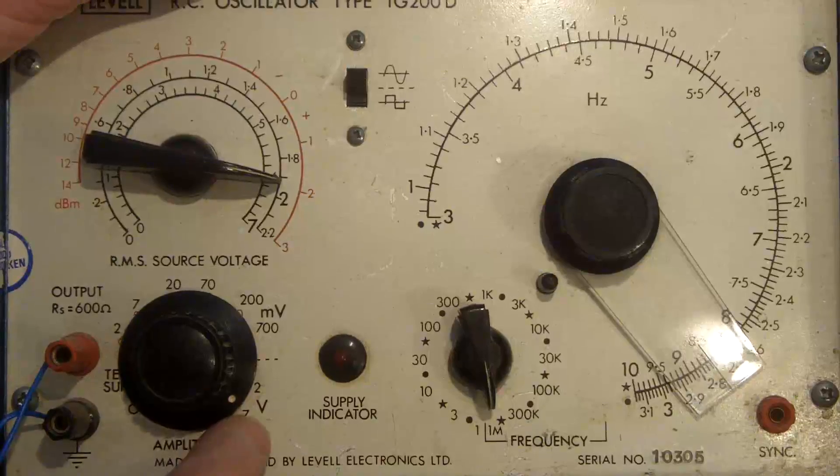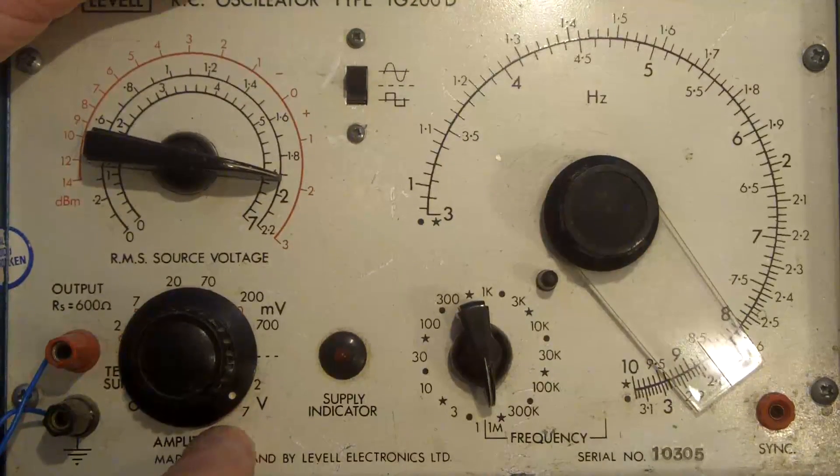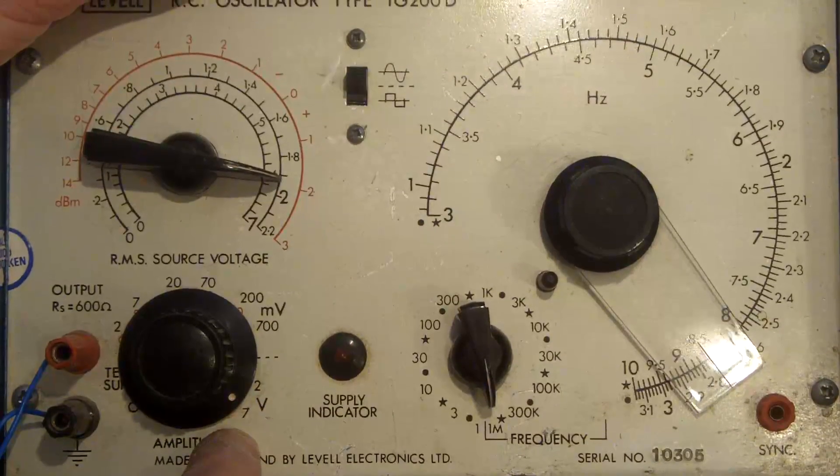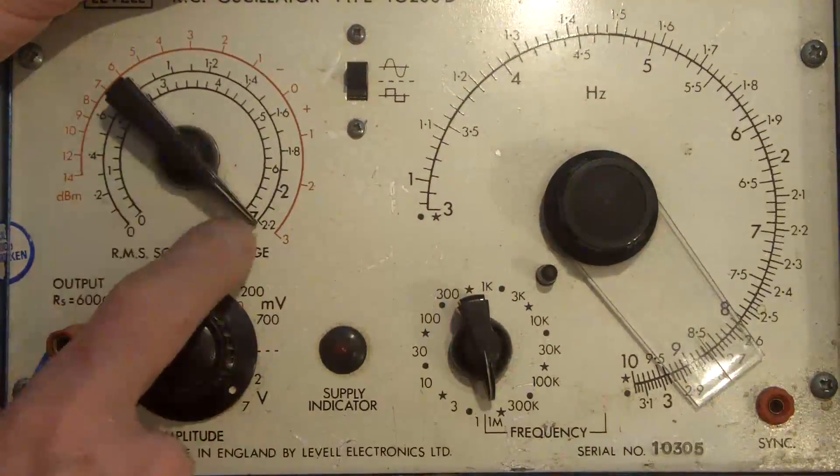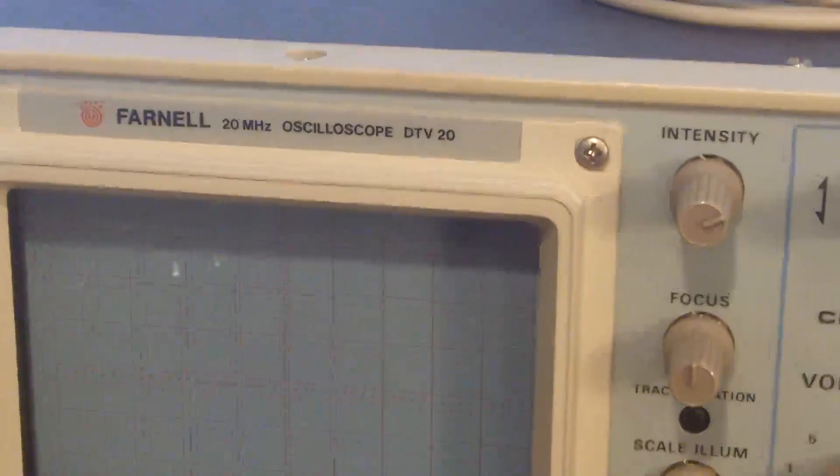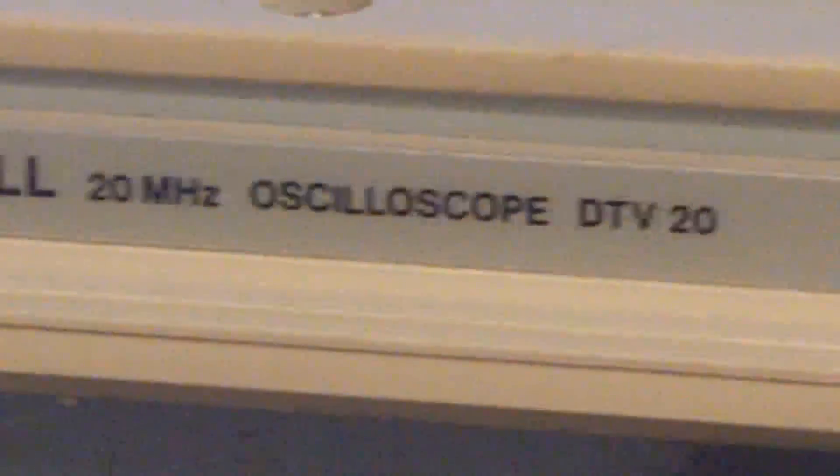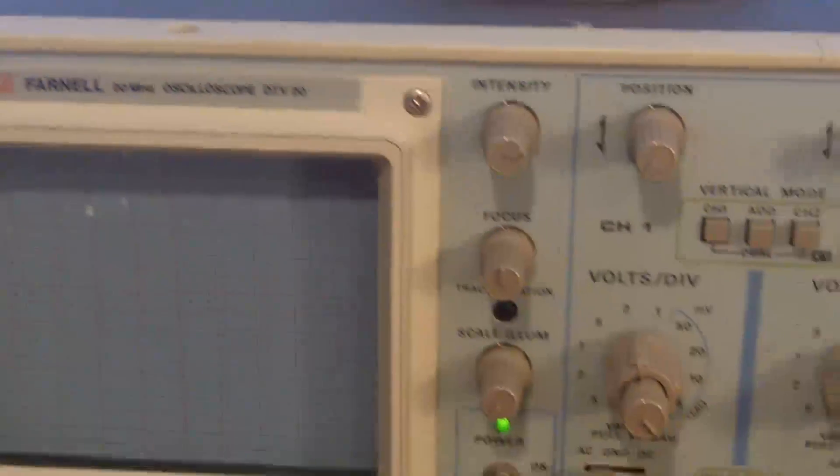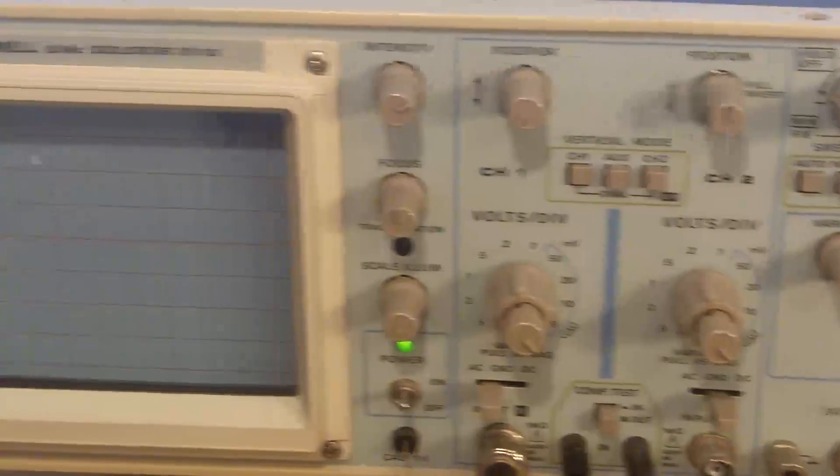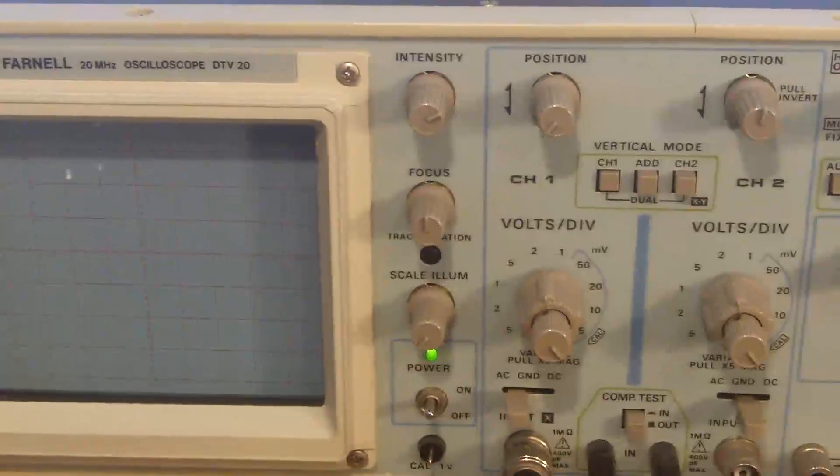They've got control over the voltage levels for the output. I've got it set at the maximum which is 7 volts RMS output. The oscilloscope is a 20 megahertz oscilloscope and it's two channels and we'll just be using one channel today.